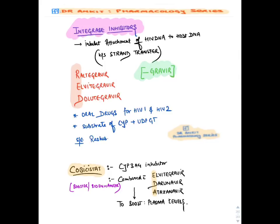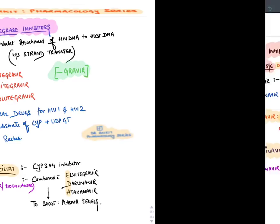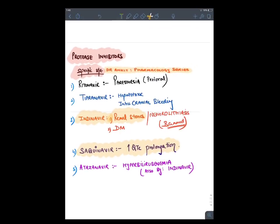Integrase inhibitors inhibit attachment (strand transfer) of HIV DNA to host DNA. Drugs ending in '-gravir': Raltegravir, Elvitegravir, Dolutegravir. Elvitegravir is combined with Cobicistat, which inhibits its degradation via CYP3A4. Cobicistat is also combined with other anti-HIV drugs: Elvitegravir, Darunavir, and Atazanavir.